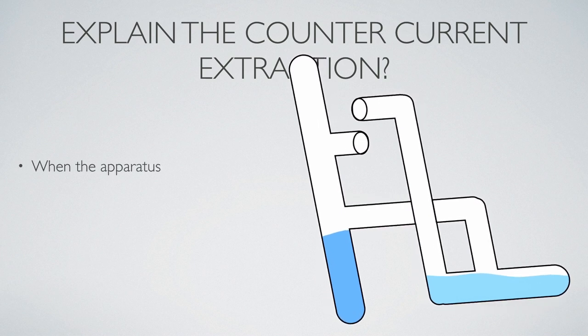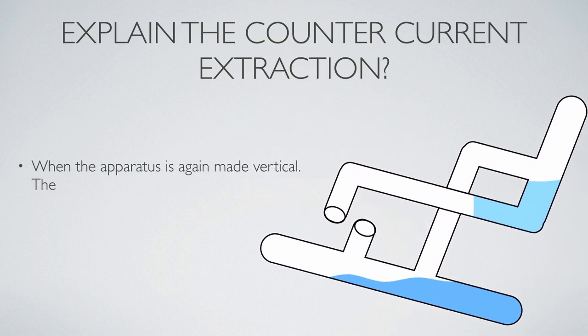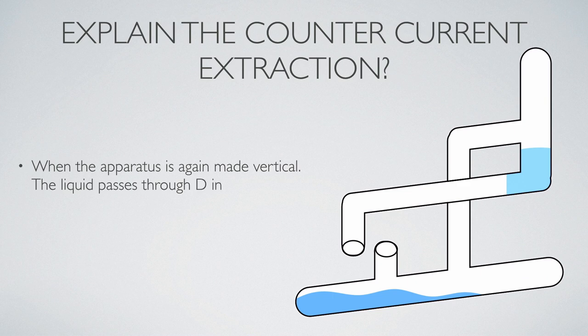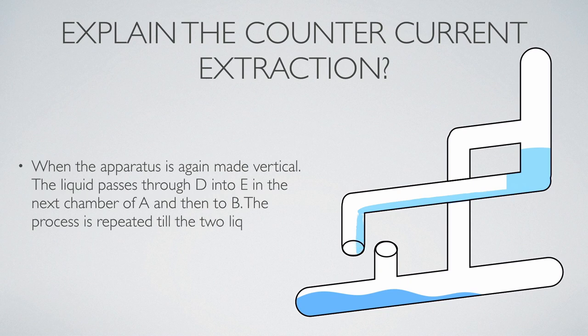When the aqueous is again made vertical, the liquid passes through D into E in next chamber of A and then to B. The process is repeated till the two liquids get almost separated.